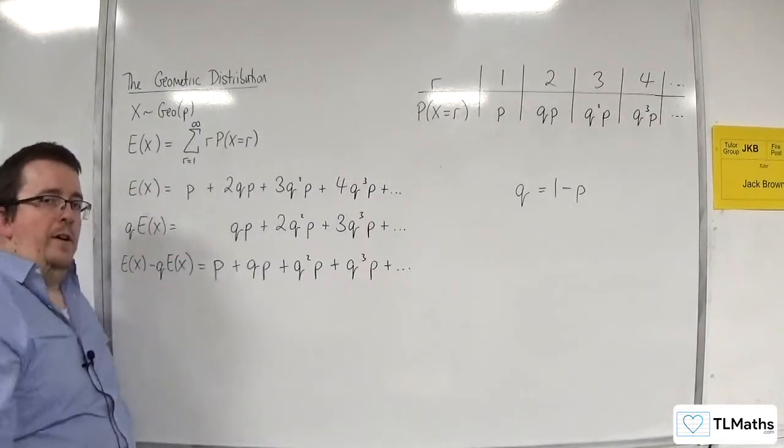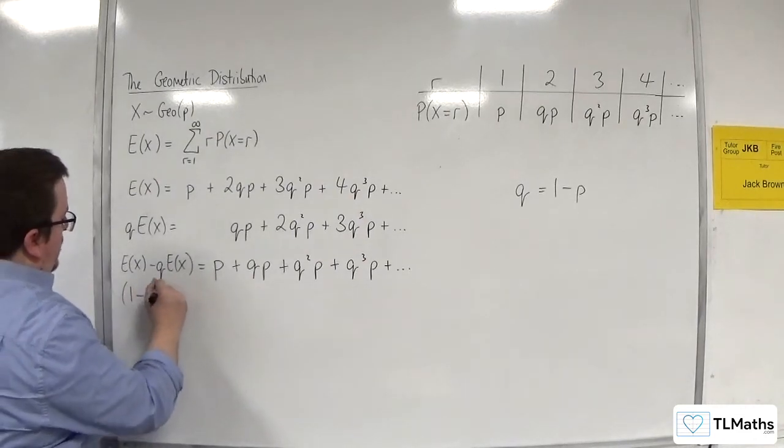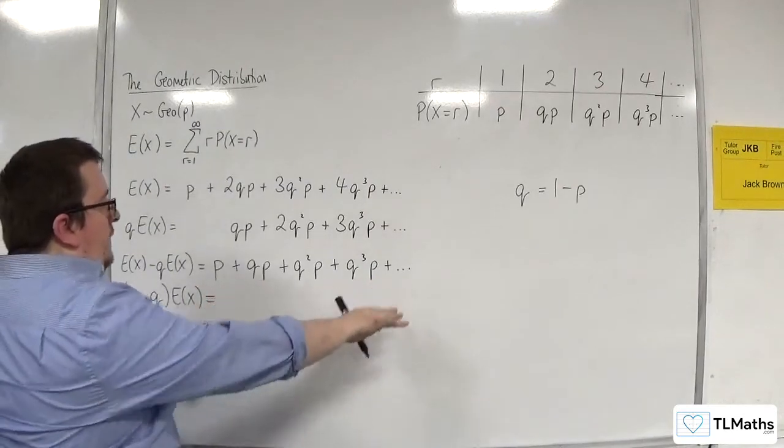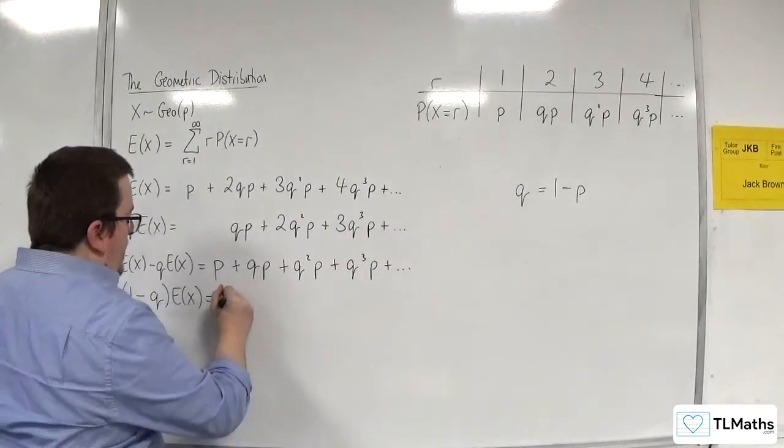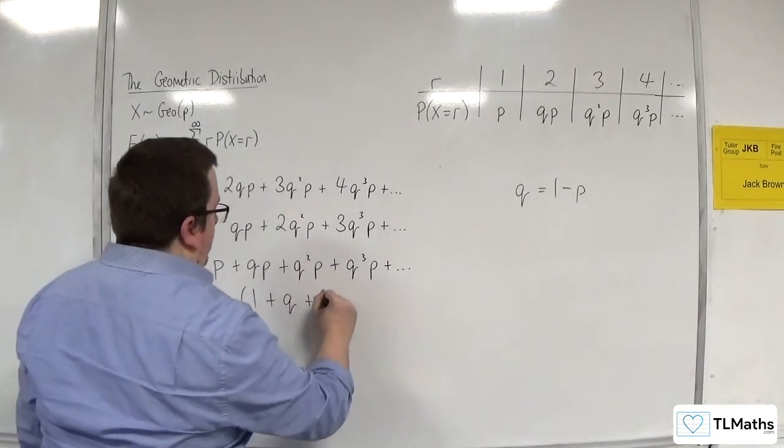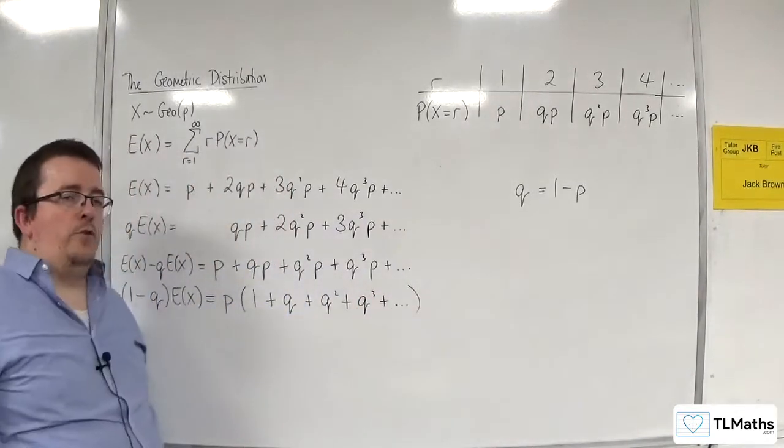Now, the left-hand side, I can factorise. They have two terms with E(X), so I can write that as (1 - q) times E(X). The right-hand side, I can factorise also, because all of those terms have a factor of p. So, I can factor out the p, I have 1 plus q, plus q squared, plus q cubed, plus, etc. An infinite series.